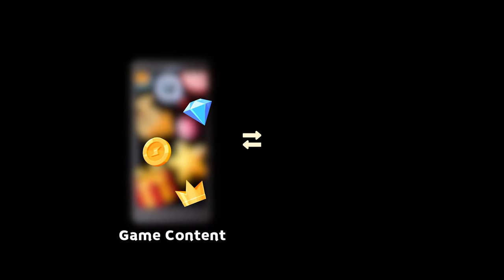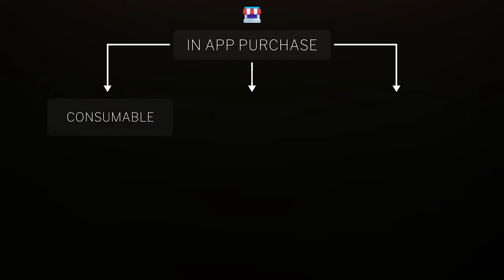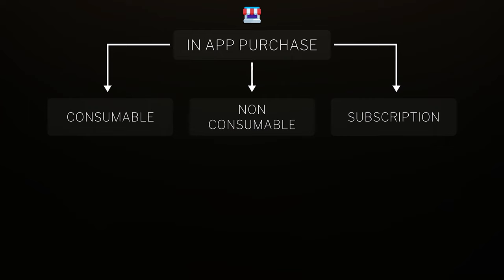In-app purchases are basically some extra content or feature that a player likes to buy in exchange for real-world money. These in-app purchases are divided into 3 categories: consumable, non-consumable, and subscription. Consumables are items that can be purchased again and again — for example, coins, gems, basically in-game currency and things like that.